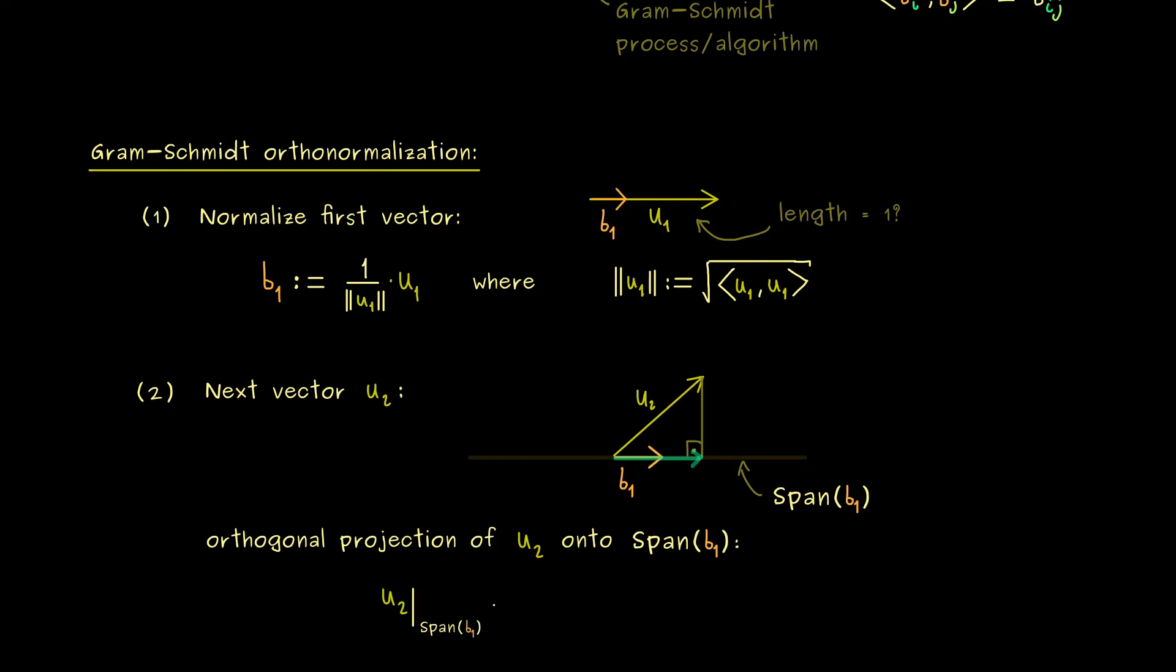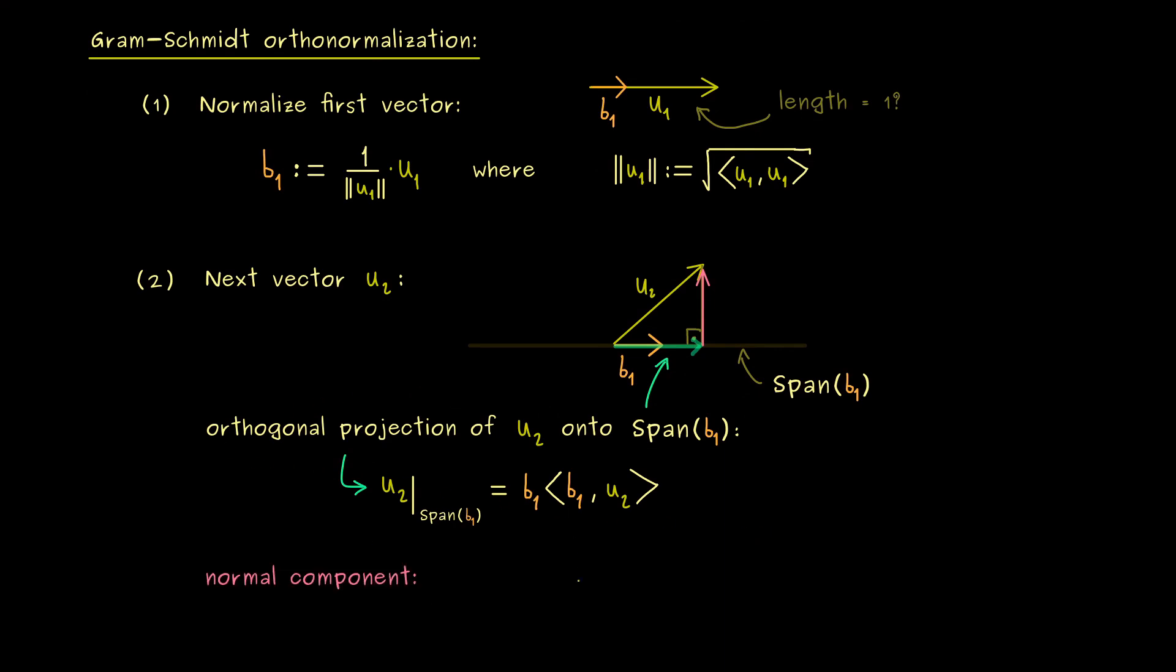It's very simple to calculate if we have an ONB of this subspace. And the single vector b1 is exactly an ONB. So we just take b1 and combine it with the inner product. In other words, here we have u2 projected to b1. And there we have it. This is the whole orthogonal projection given as this vector there. However, we don't want this component of u2. We want the one that is orthogonal to the subspace. So actually we want to have the normal component of the orthogonal projection.